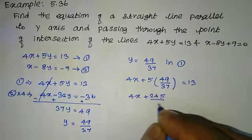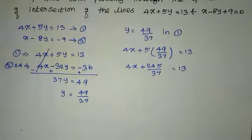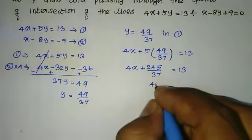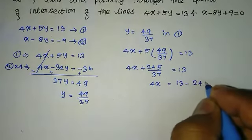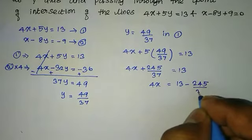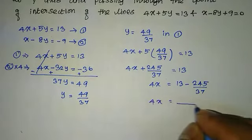4x plus 245 by 37 equal to 13. 4x equal to 13 minus 245 by 37. So 4x equal to...